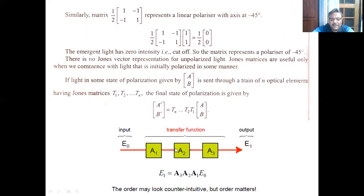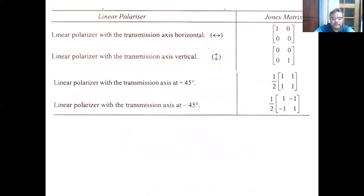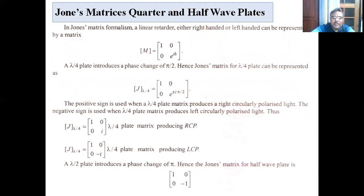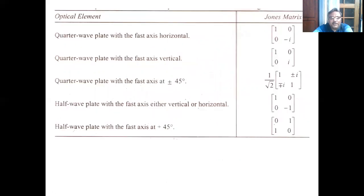These are the Jones matrices for polarizers: a linear polarizer with horizontal transmission axis, a linear polarizer with vertical transmission axis, one with the transmission axis at +45 degrees, and one at −45 degrees. We also have the matrices for the quarter-wave plate and half-wave plate for various fast-axis orientations. These matrices should be memorized.